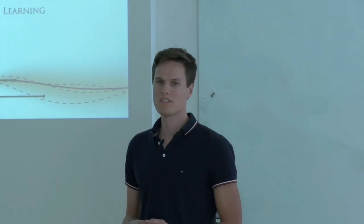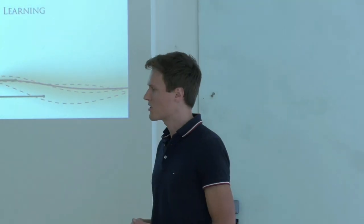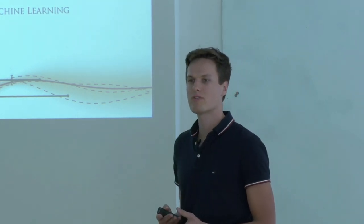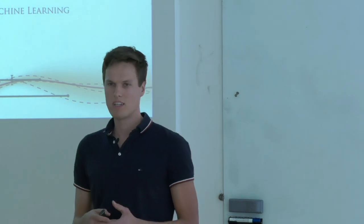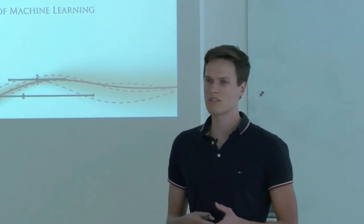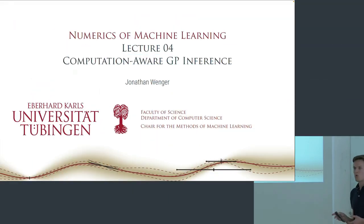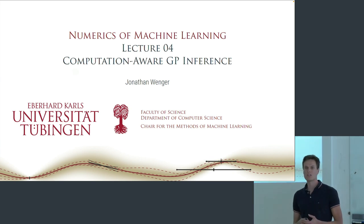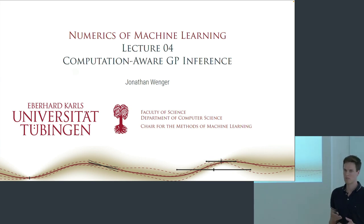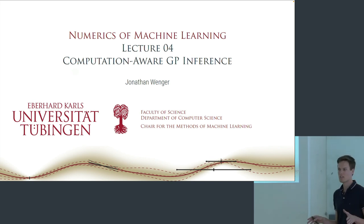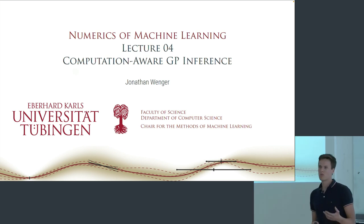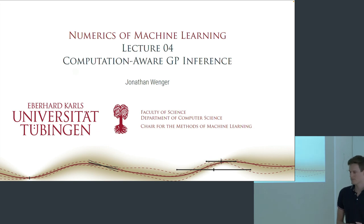Welcome everybody to the fourth lecture on numerics of machine learning. Last time we took a closer look at iterative approximation algorithms for Gaussian processes. Today is the culmination of this first sequence on Gaussian processes. What if I told you that today you'll see how to do exact uncertainty quantification in arbitrary time — so no matter how much computation you put in, whatever your budget is, you can still quantify how far away you are from the function you're trying to learn.